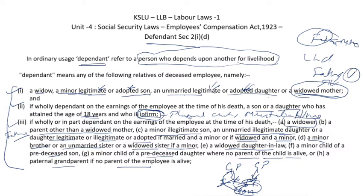To summarize, there are three categories of dependents under Section 2(1)(d). The first category involves direct relationships. The second category covers sons and daughters who are unable to earn due to illness or physical challenges. The third category is a special extended category including the male spouse, father, illegitimate sons, unmarried illegitimate daughters, married minor widowed daughters, widowed daughter-in-law, and similar extended relations. Please go through this definition carefully in Section 2(1)(d) of the Employees' Compensation Act 1923.